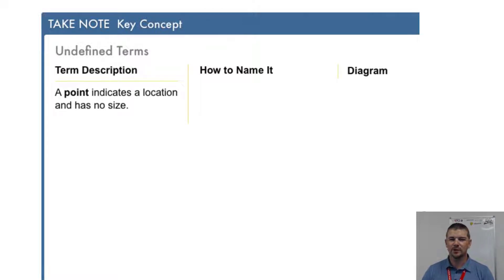First, term description: a point indicates a location and has no size. How to name it? You can represent a point by a dot and name it by a capital letter such as A. And a diagram, here we see the point A labeled with the capital A.